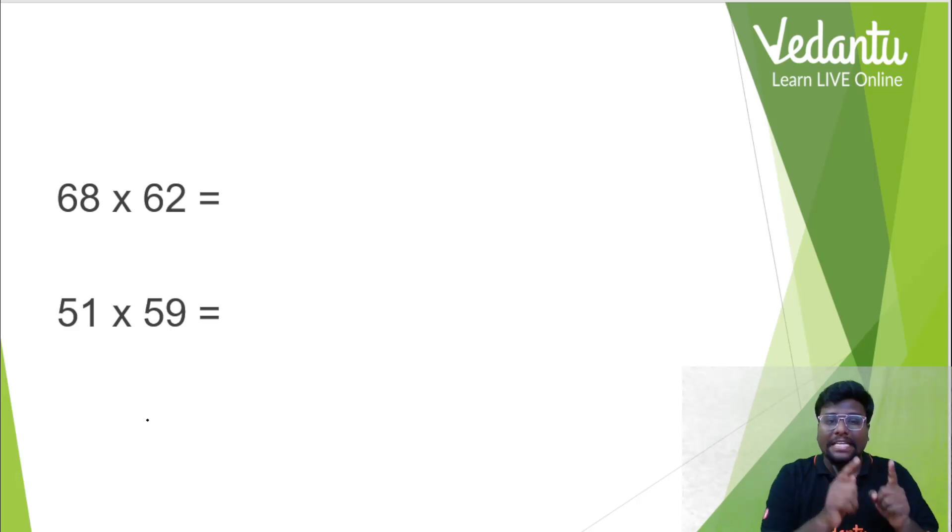Let's do this. You have 68 multiplied with 62. You have 68 multiplied with 62. The first check, 6 and 6, same. 8 plus 2, 10. All right? We can go with the process. How do we do it? You get 10 seconds to do it. Come on.